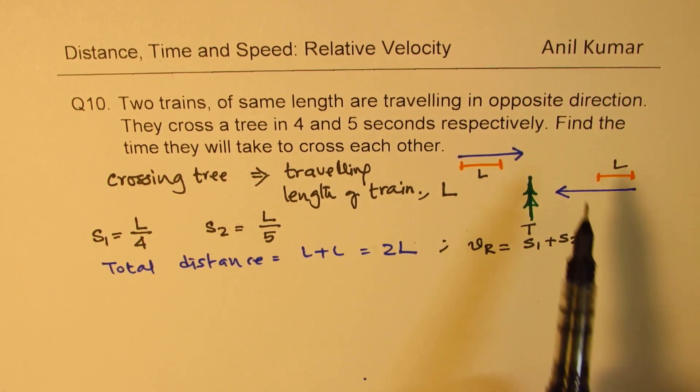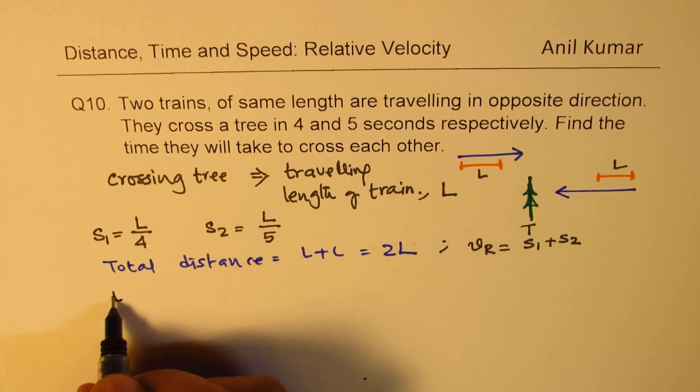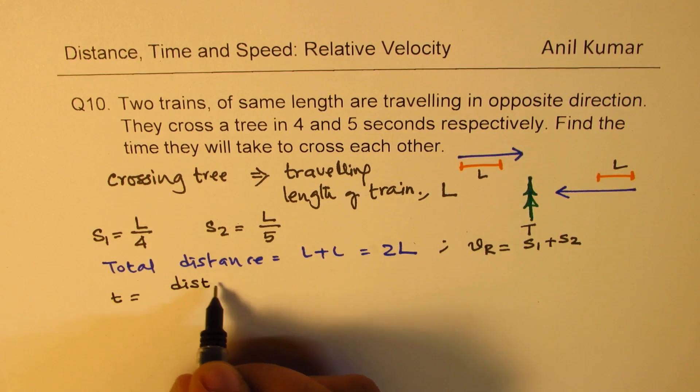And now it is very easy. Find the time they will take to cross. So time equals to distance over speed.